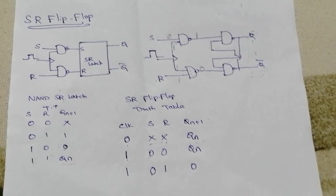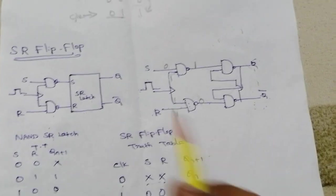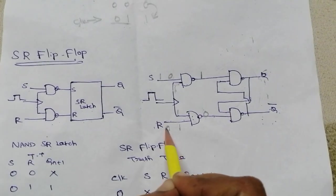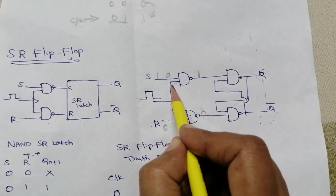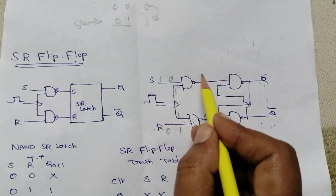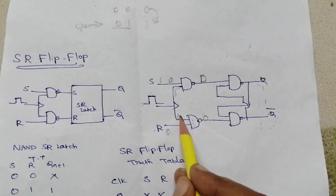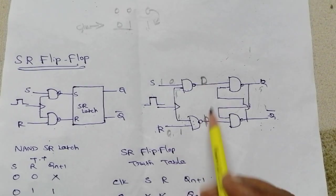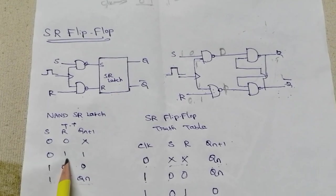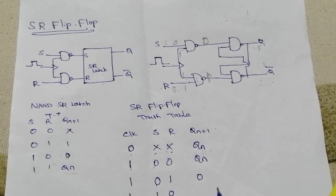Next, with clock=1 and S=1, R=0: the clock input to both gates is high. The 1-1 combination at the S gate gives output 0, and the 1-0 combination at the R gate gives output 1. So the NAND SR latch receives inputs 0 and 1, and its output is Q=1. This is the set state.